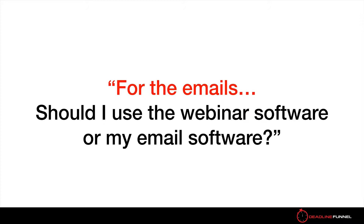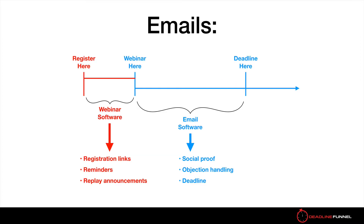One of the things I want to cover first is for the emails — you might be wondering, should I use the webinar software or my own email software such as Drip, ConvertKit, Ontraport, etc.? The reason we get this question is because a lot of webinar software has their own email that goes out with things like registration links — each person gets their own specific, unique attendance link. So what are you supposed to use? What we recommend whenever possible is to use the webinar software's emails for everything between the registration and the actual webinar itself.